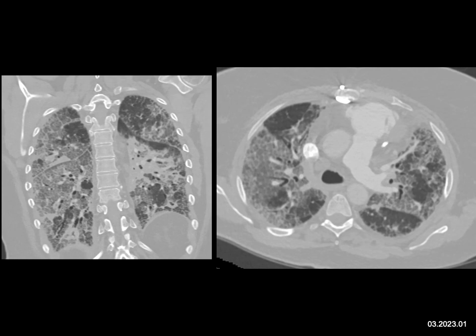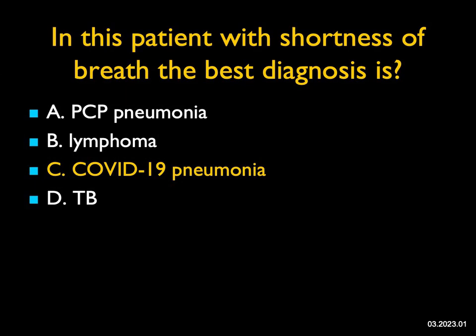Pneumocystis usually has a good history — patients are immunosuppressed, IV drug abuse — but it's typically perihilar ground glass. Lymphoma: I don't see bulky nodes to suggest lymphoma. TB can give you infection but it's typically more upper lobe, usually not bilateral, not this type of airspace filling. COVID-19 pneumonia infiltrates are best seen in mid to lower lung fields, can involve any part of the lung, with air bronchograms and ground glass infiltrates. This was COVID-19 pneumonia.